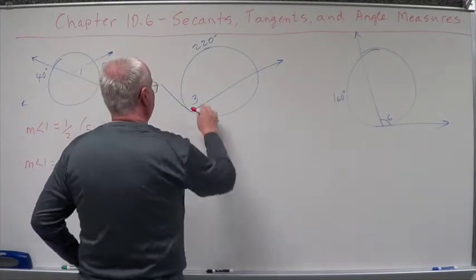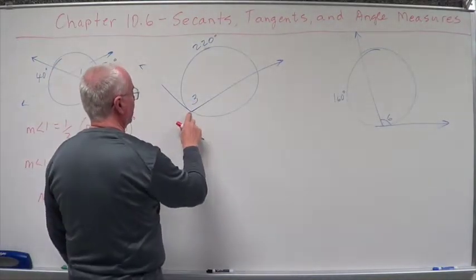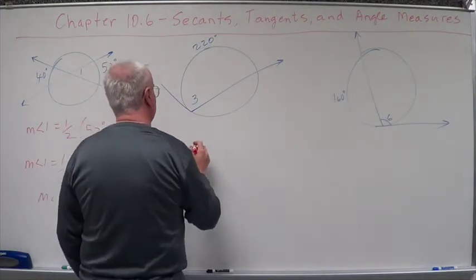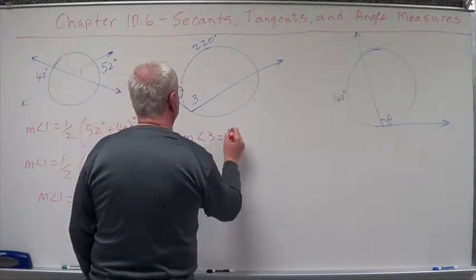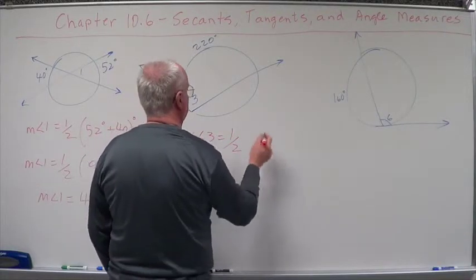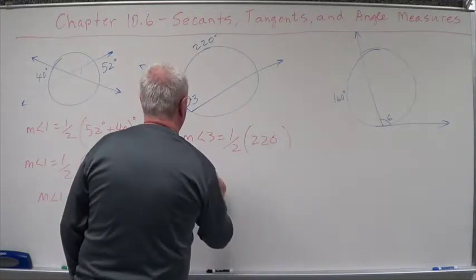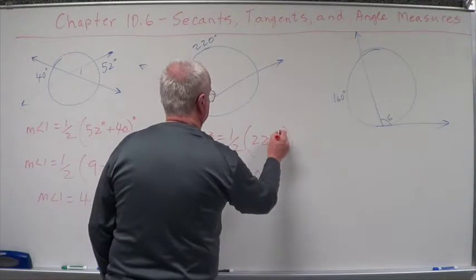On this one, intersection on the circle. Remember, it's one half of the arc formed. Well, the arc formed starts here, comes around over here. It's identified as 220, so we've got measure angle three equals one half of 220. Measure of angle three equals 110 degrees.